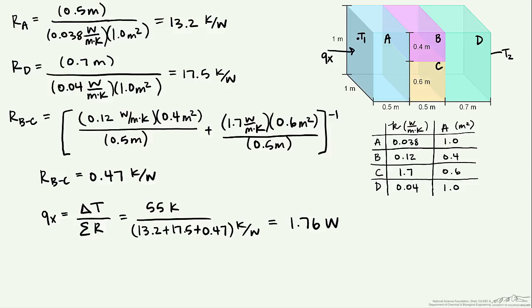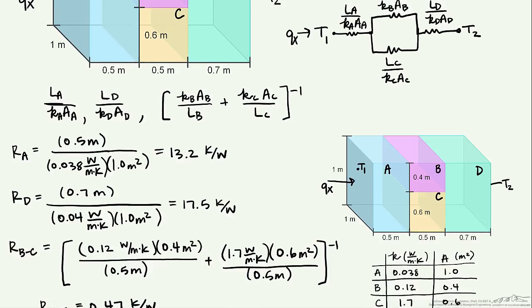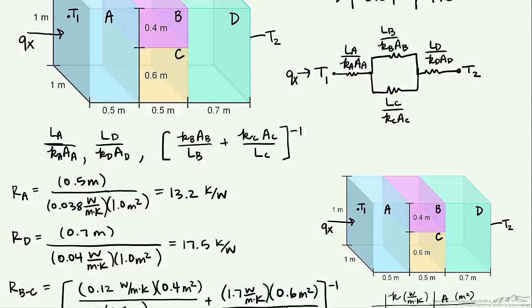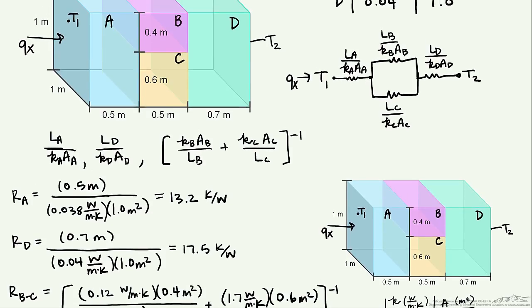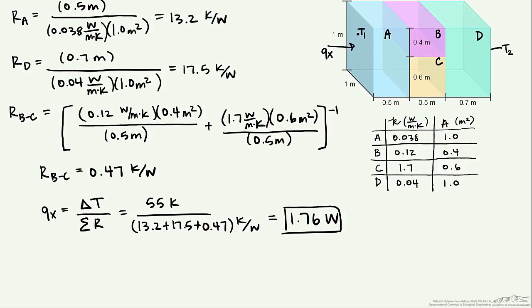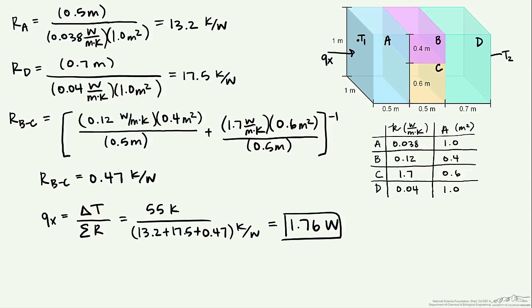we end up with a heat transfer rate of 1.76 watts. So if you notice here, instead of us being able to use our standard thermal circuit where we just sum up all of the resistances, because of the split in this wall right here, we're going to have to create an equivalent resistance for those two parts of the wall and find our heat transfer rate using that.